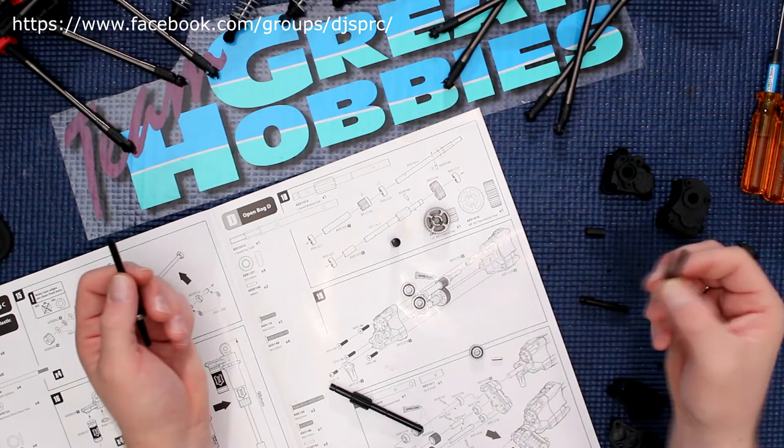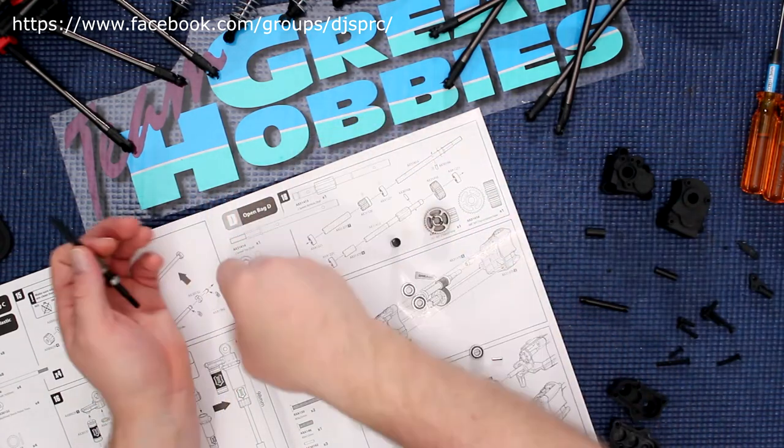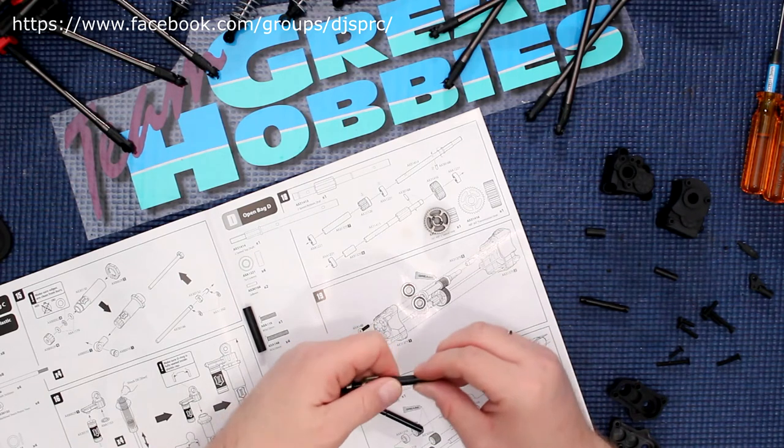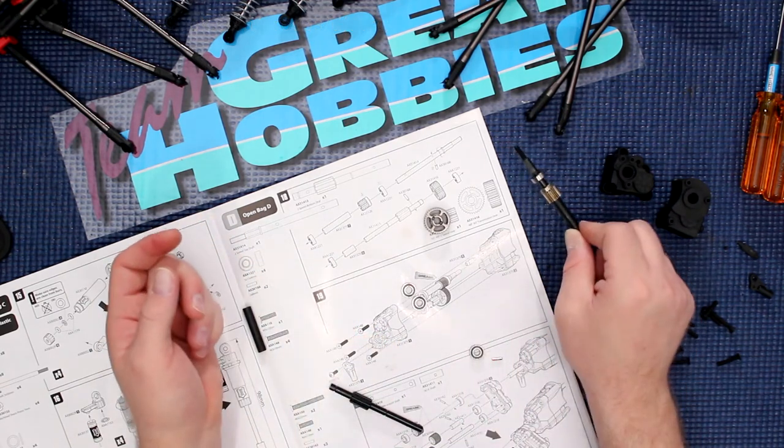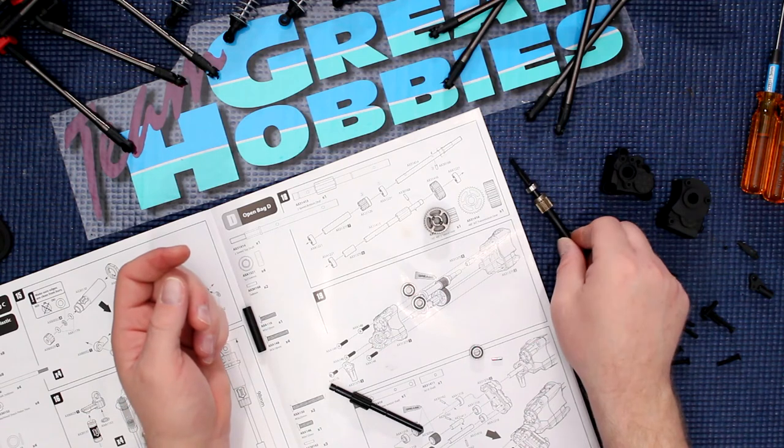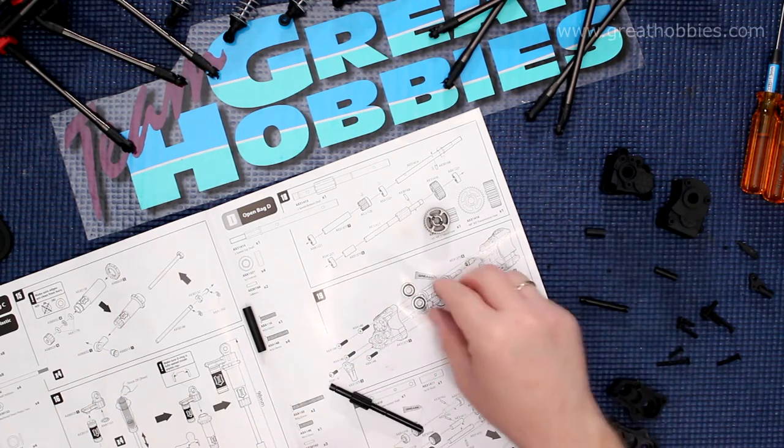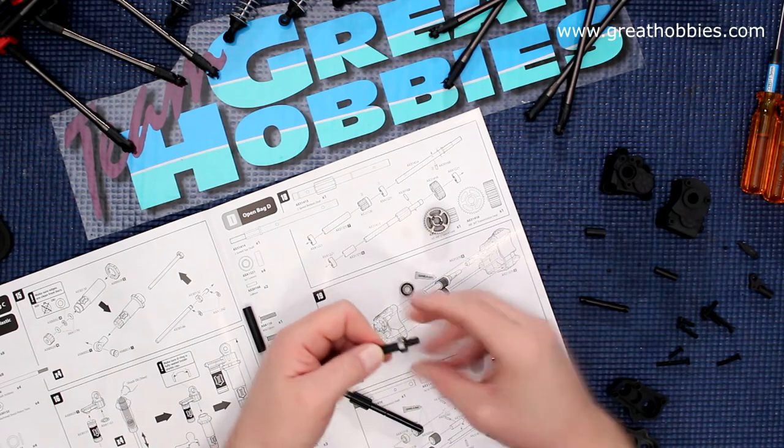And like I said in the past, the book tells you what sleeve to grab, and this is the sleeve we need to grab. Let's put this guy aside. Making sure... oh, I forgot a bearing. There's a bearing going here.